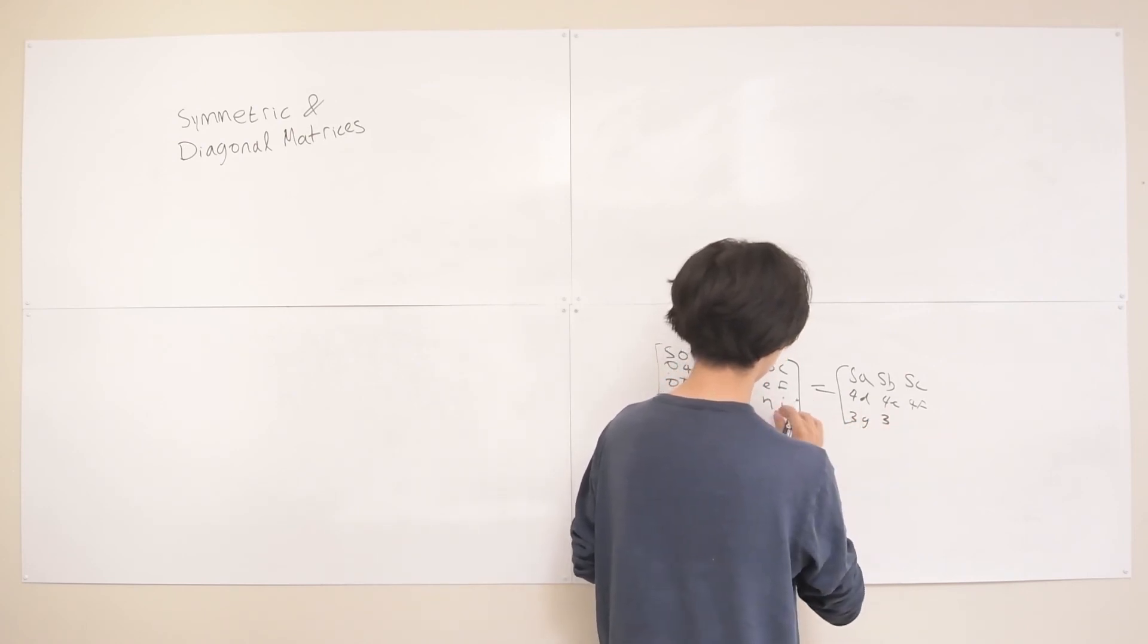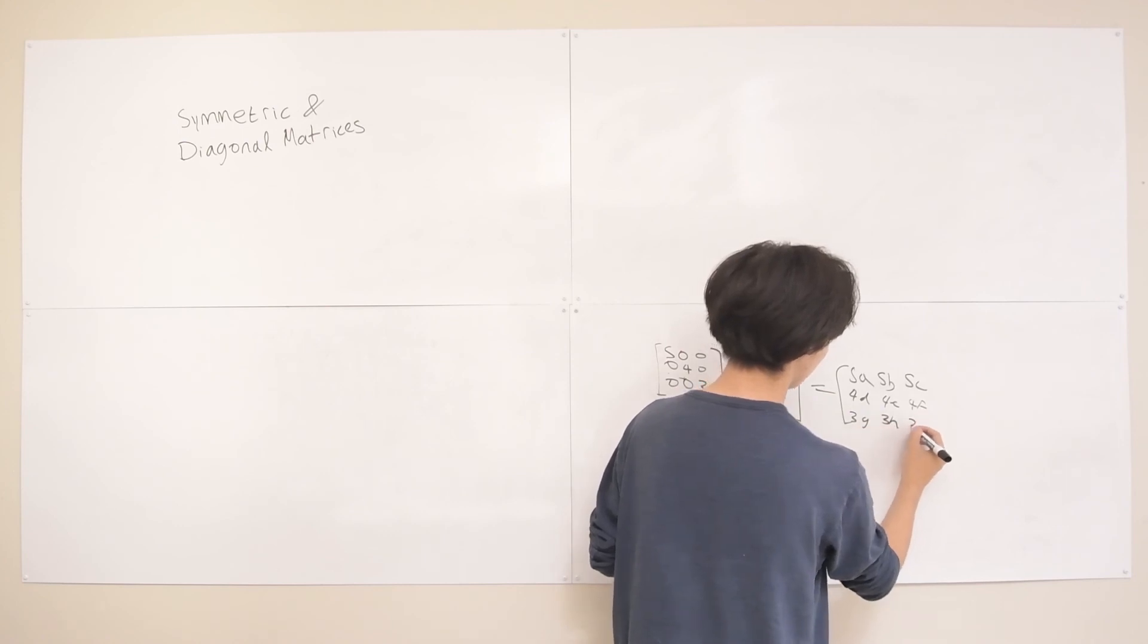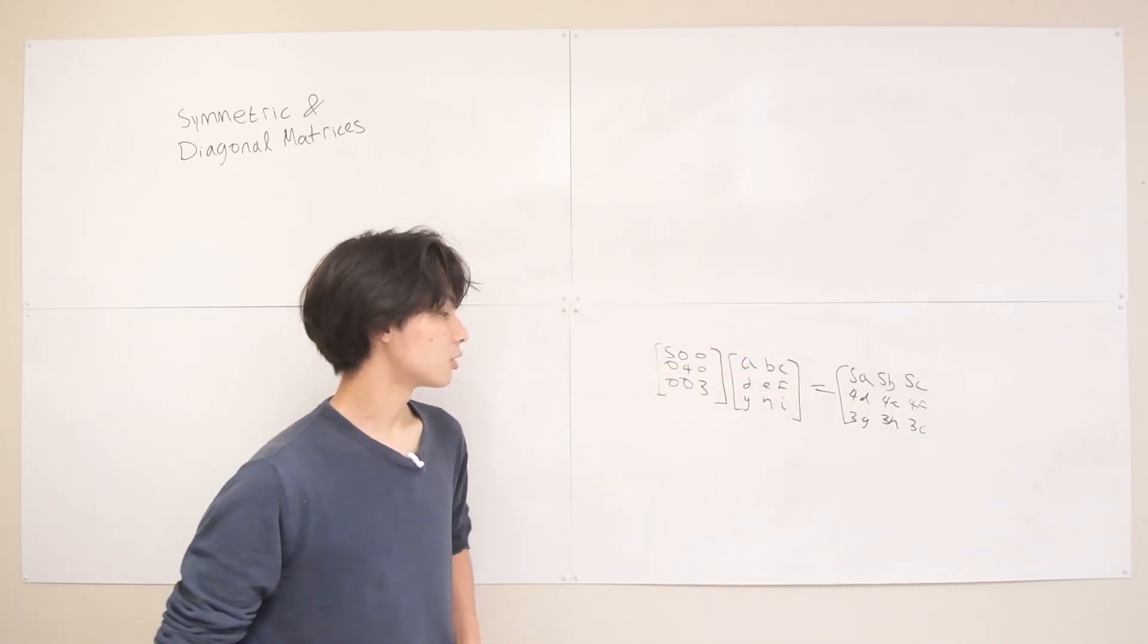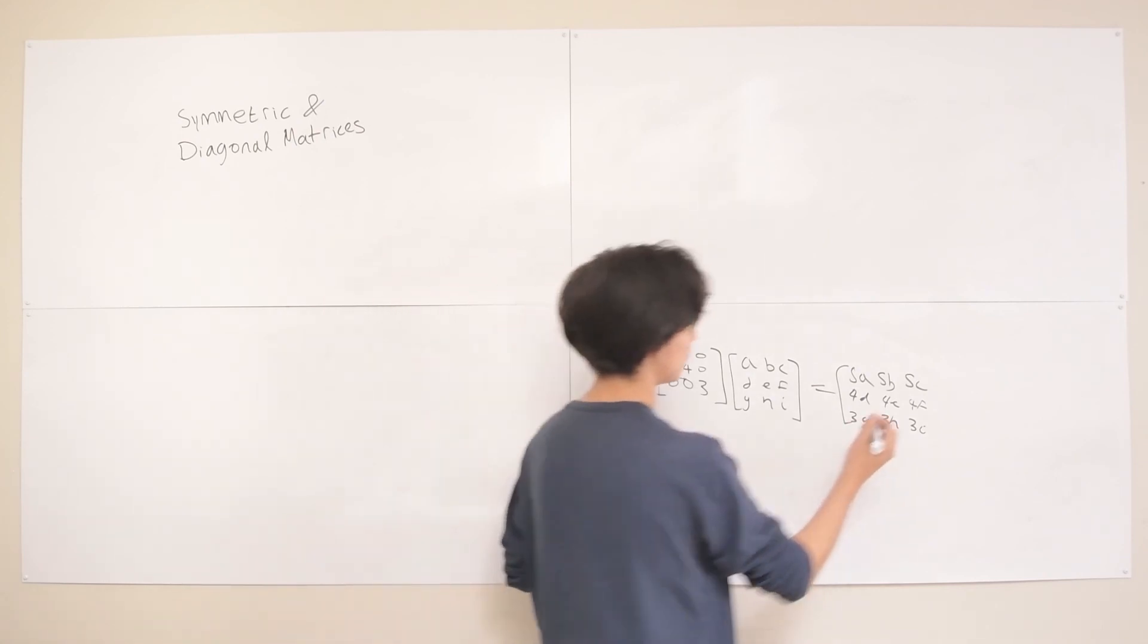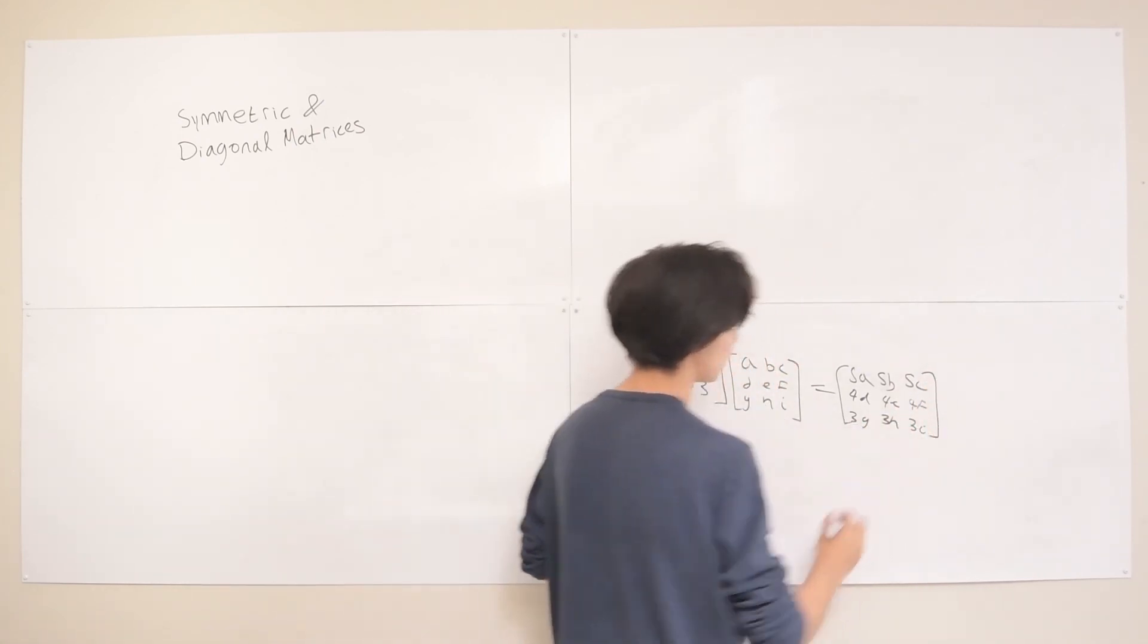So we end up having 4E, 4F, and then we just get 3G, 3H, 3I. All right, great. I should make sure I got my alphabet right. Anyways, all right, that's good. So that covers everything. So that basically covers that thing.